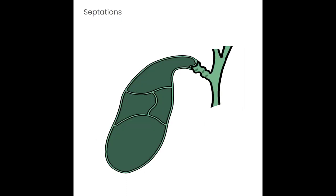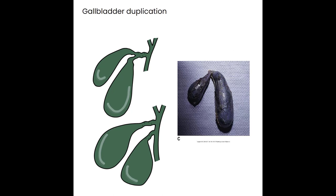Septations occur within the lumen of the gallbladder — stringy lines going through the lumen — occurring when the gallbladder failed to open completely during development. They can catch stones or cause sludge but typically don't cause major problems. Gallbladder duplication is the presence of two gallbladders and is very rare. The two lobes can share a cystic duct or each have their own. Duplication is difficult to confirm by ultrasound because septations can appear very similar, and cystic ducts are not well visualized by ultrasound.